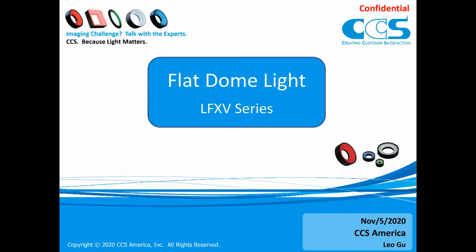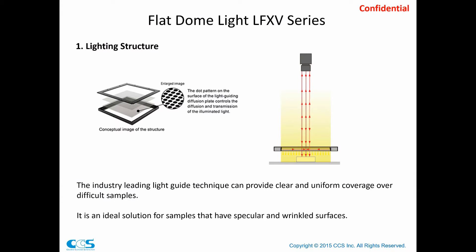Let's take a deeper look at what is this FlatDome LFXV series. This light actually uses a CCS original light guide technique. If we look at the structure of the light, we have a transparent light guide in the center, and then we put the LED on the side. In this transparent light guide, we have a lot of micro dots. When the light comes out from the LED, it will first pass inside the light guide, and when it hits the micro dot, the micro dot will diffuse the light to the object side. Because it's a transparent light guide and the micro dots are really small, the camera can still see through it. So from the sample point of view, we will have light coming from all different angles to create a true shadowless illumination.